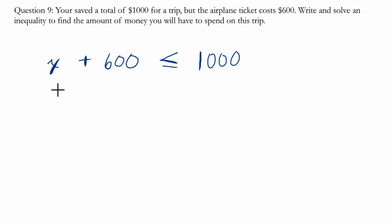So this tells us our inequality: the amount of money we want to spend plus the cost of the airplane ticket has to be less than or equal to the $1,000 we've saved. And then solving for x,